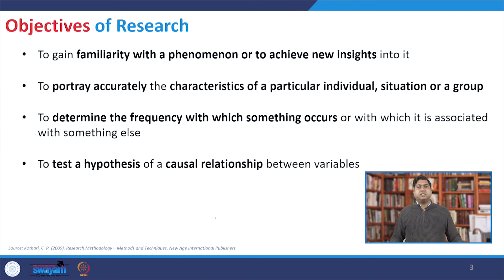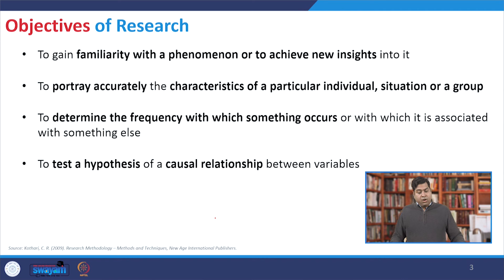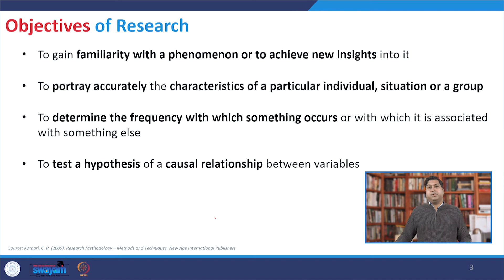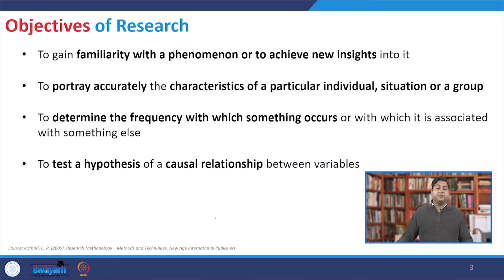Coming to the objectives of research — these are broad points, and not limited to only four statements. The first objective is to gain familiarity with the phenomena or to achieve new insight. We have to search the fact, establish the law, and then achieve it through experiment. If a repetitive experiment gives the same result, we can come to a conclusion, which is very important before we implement it — because sometimes implementation is on infrastructure or, in other domains like medical science, on human trials.